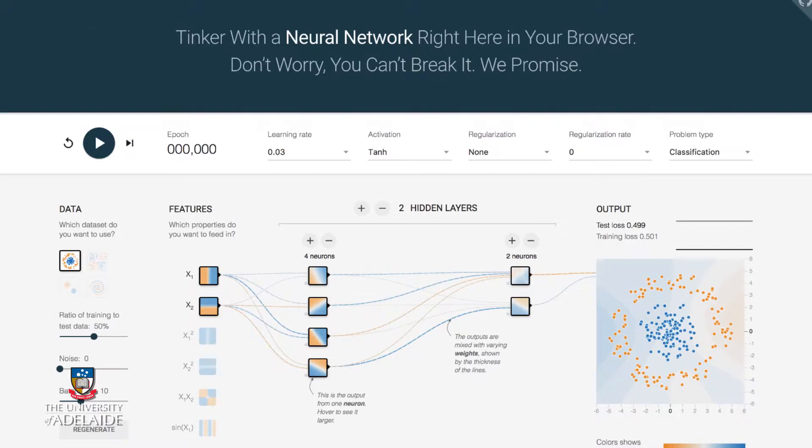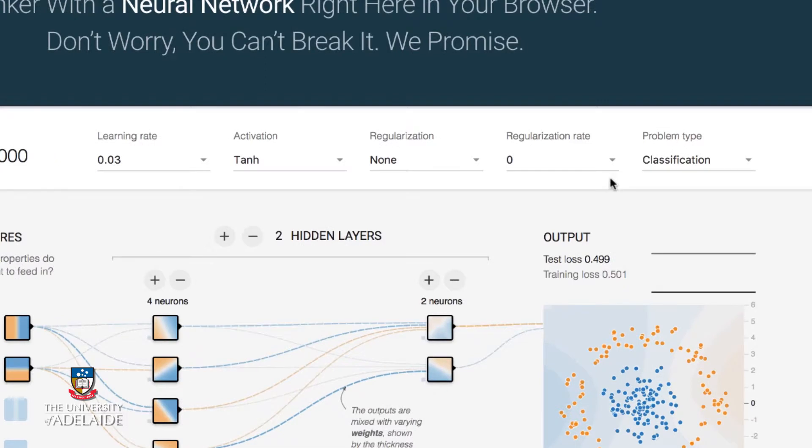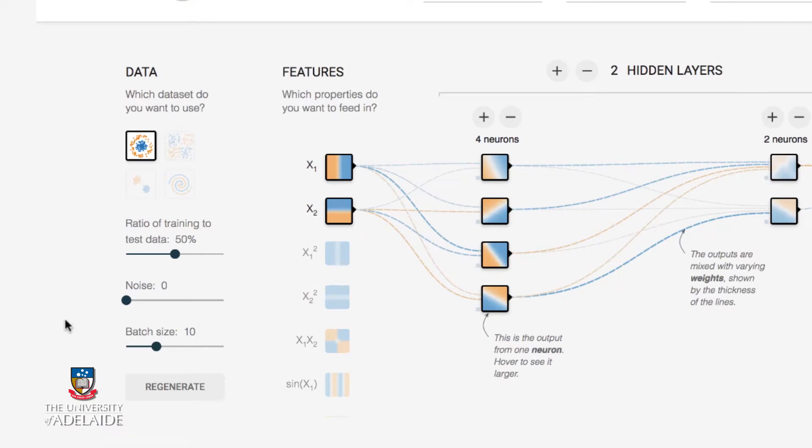So let's do a quick tour of what the demo looks like. Across the top here, we have some items to do with the training of the network. For this first section, we're not going to be so interested in these values here. Let's look down the left-hand side. Down the left-hand side, it's to do with the data that's being classified. And we're using the default, which is this concentric circle of data points of two classes, blue and orange.